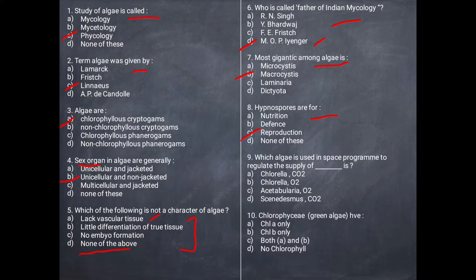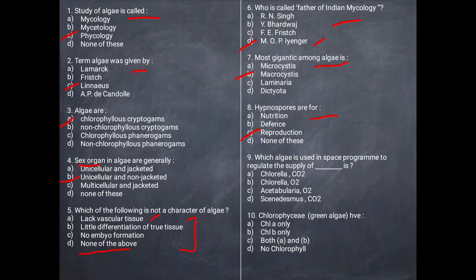Next question: Which algae is used in space programs to regulate oxygen supply? This algae is used in space programs because it is rich in oxygen. The correct answer is B — Chlorella.